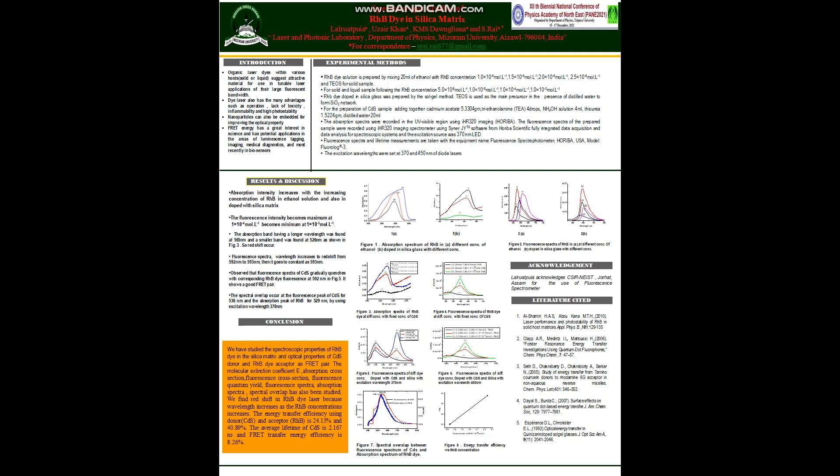So for our next step, that is energy transfer between CDS and Rhodamine, as shown in Figure 7. This shows a good spectral overlay between fluorescent spectrum of our donor CDS and absorption spectrum of the acceptor Rhodamine dye. So for excitation wavelength of 317, fluorescence peak of CDS at 526 nm and absorption spectrum of Rhodamine B at 529 nm shows a good overlap.